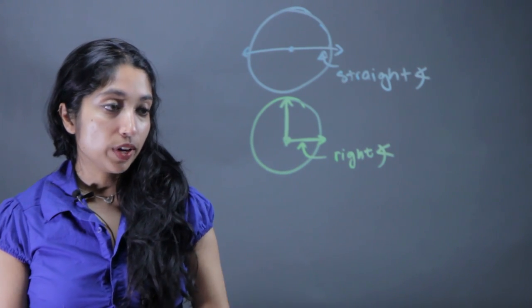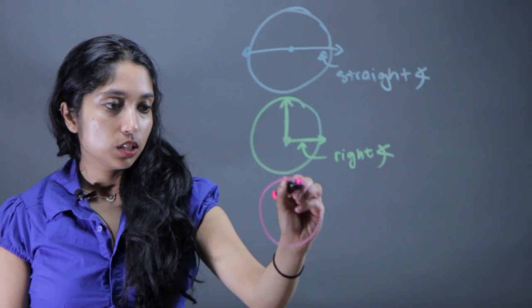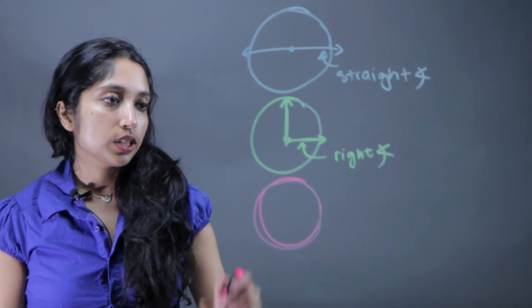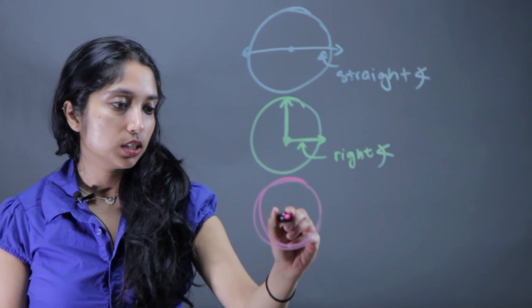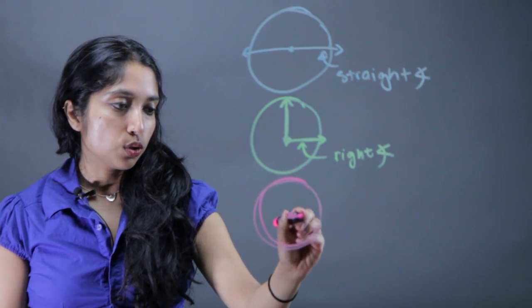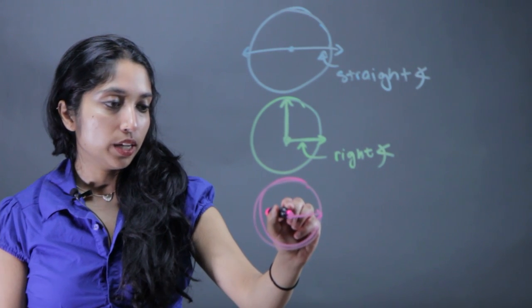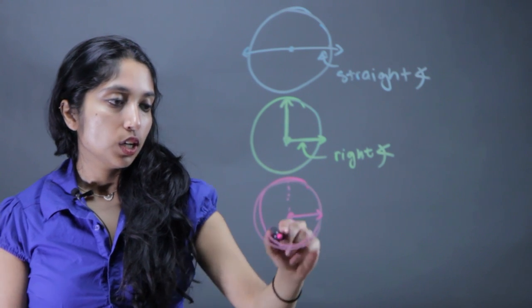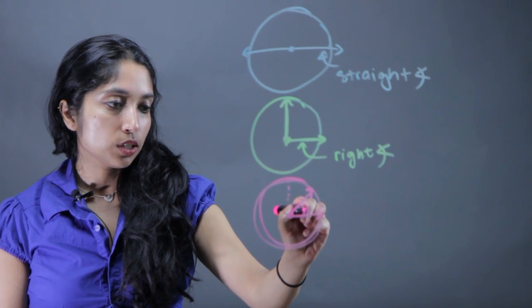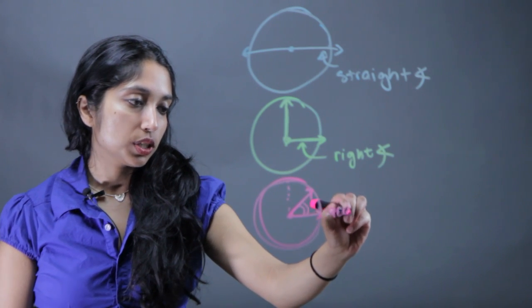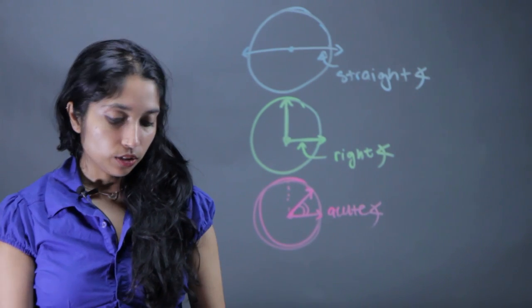Now when you're defining an acute angle, it's any angle that's going to give you a piece of this circle that's smaller than that right angle. So for example, the right angle would have gone straight up like this. So anything smaller than that. You can see this right here, it's going to be smaller than all of that. This is an acute angle.